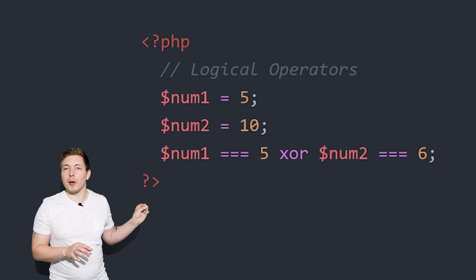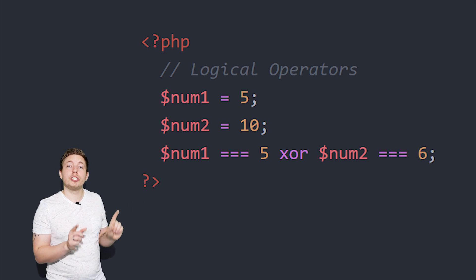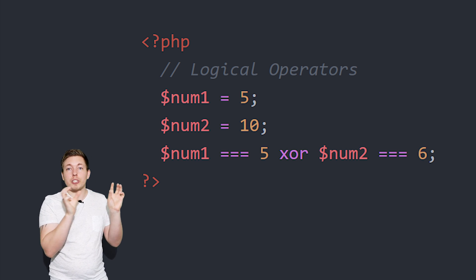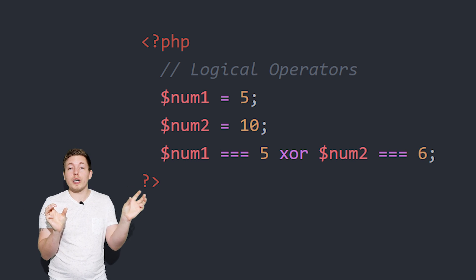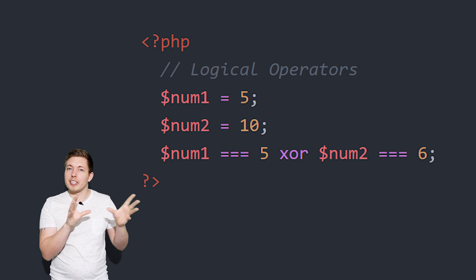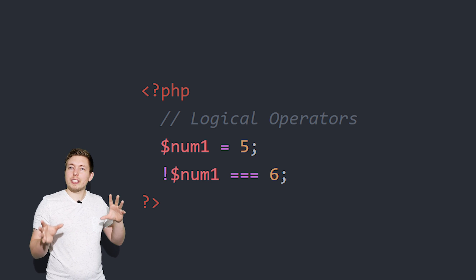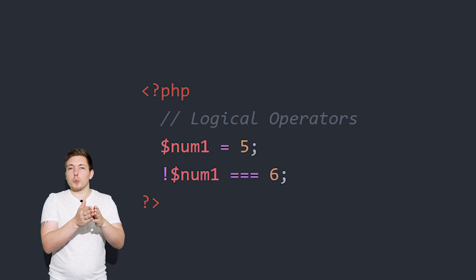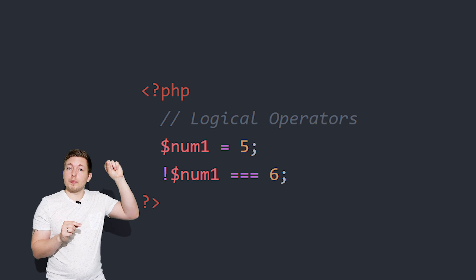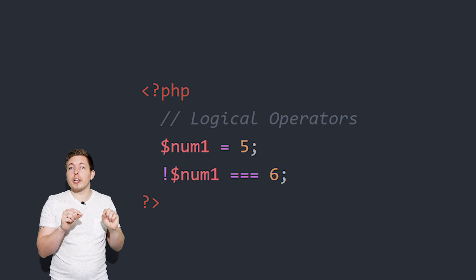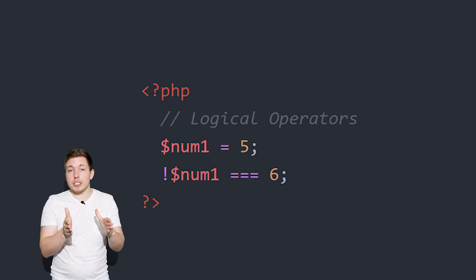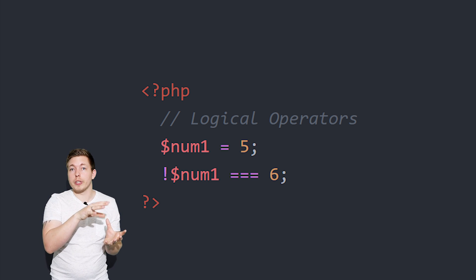Then there's 'xor', which is a little different: one of the statements must be true, but they can't both be true. If both are true, it returns false. If one is true, it returns true. If both are false, it returns false. Finally, the last example uses an exclamation mark in front of a single statement — for example, checking if num1 equals 6. It does not, but because of the exclamation mark, I'm not checking whether it's true or false; I'm checking the opposite. I'm checking whether this statement is false — and if it is false, the overall statement returns true.